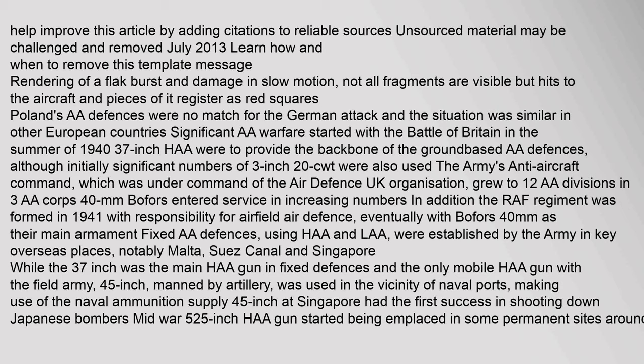Poland's AA defenses were no match for the German attack, and the situation was similar in other European countries. Significant AA warfare started with the Battle of Britain in the summer of 1940. The 3.7-inch HA gun was to provide the backbone of ground-based AA defenses, though initially significant numbers of 3-inch 20 CWT were also used. The Army's Anti-Aircraft Command grew to 12 AA divisions in 3 AA corps. The 40mm Bofors entered service in increasing numbers. Fixed AA defenses using HA and LAA were established by the army in key overseas places, notably Malta, Suez Canal, and Singapore.